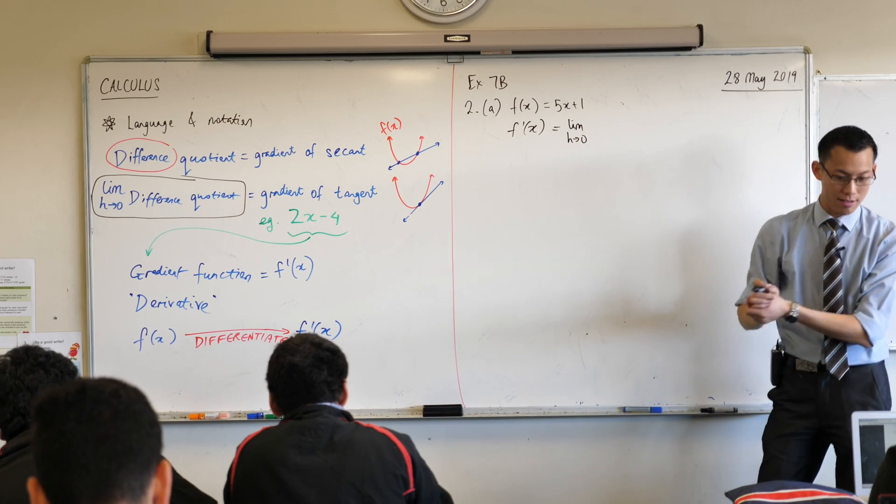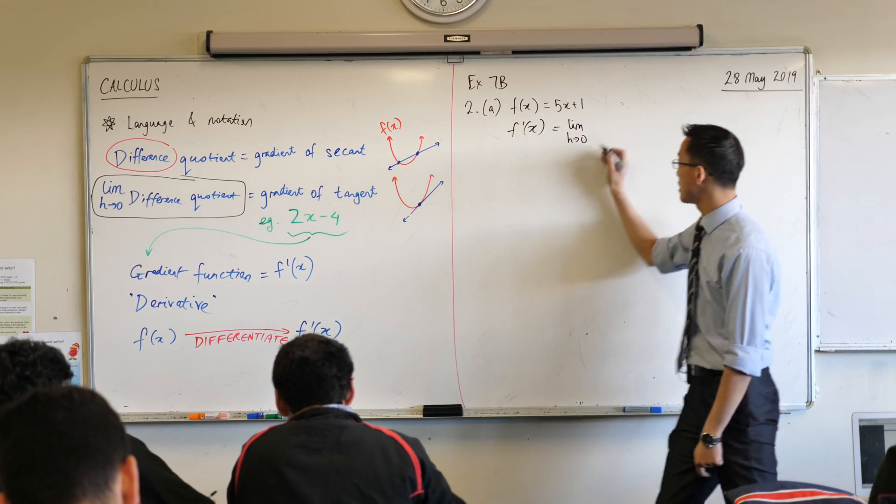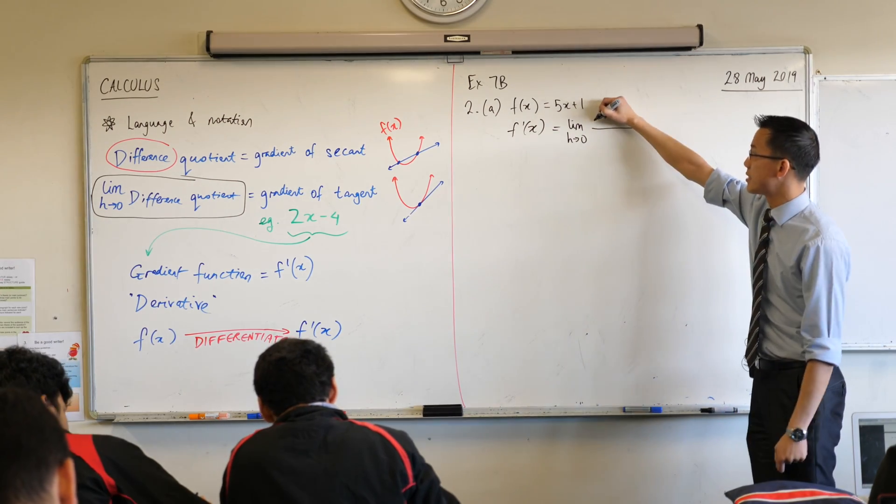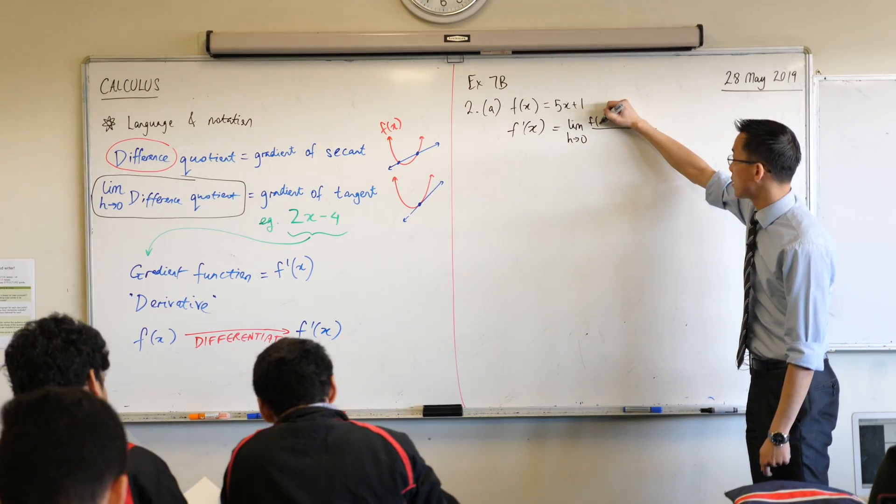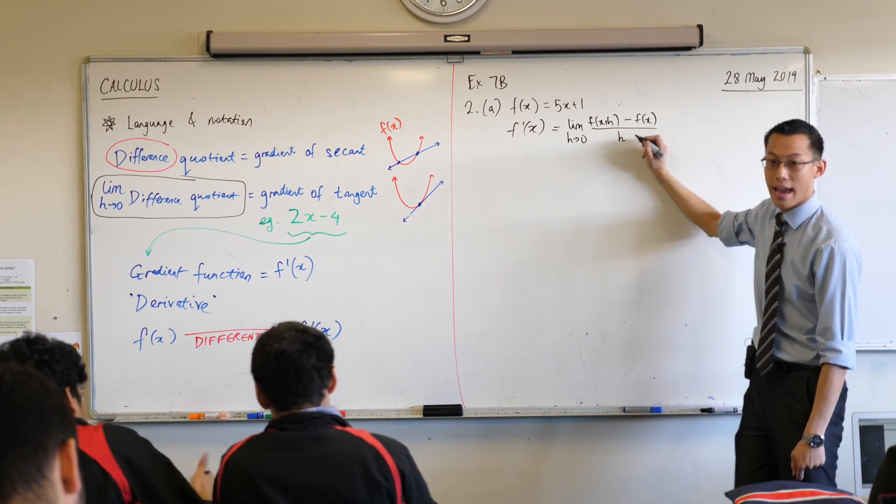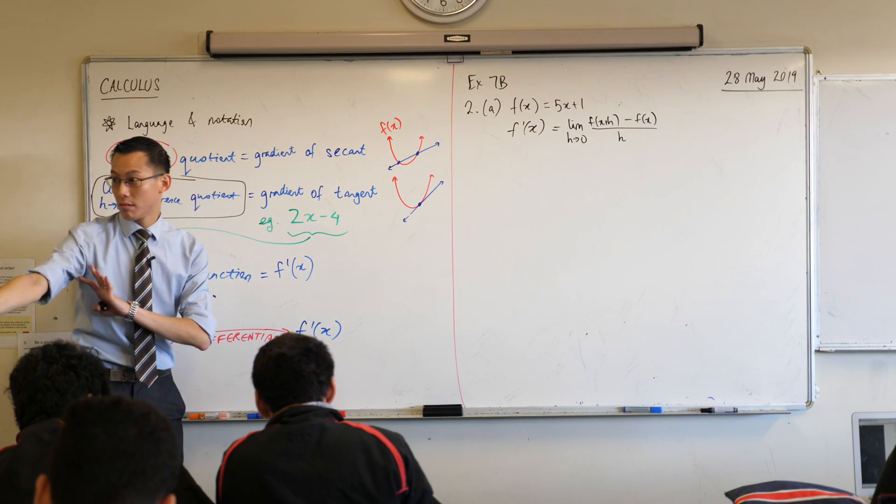And hopefully, just like a page earlier in your book, you've got the difference quotient. What is the difference quotient? It's f of x plus h minus f of x all divided by h. Do you want me to pause on a thing or explain something? You're okay? Fantastic.